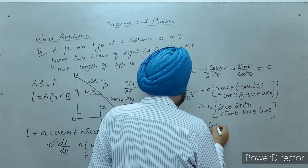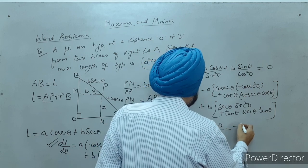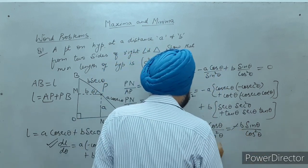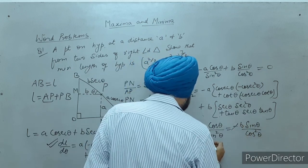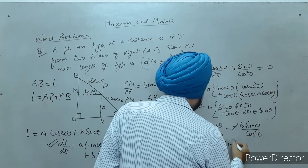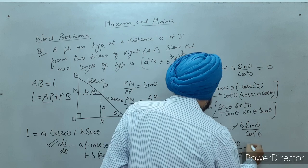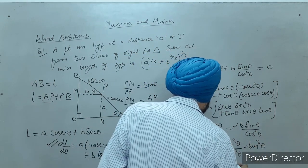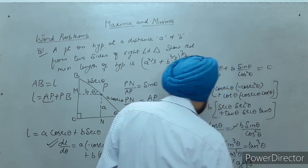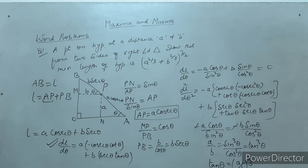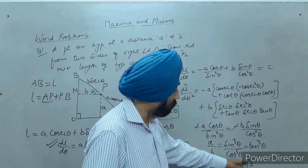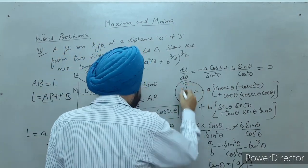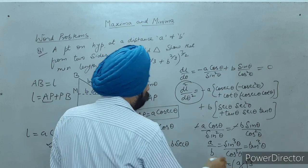Setting DL/dθ equal to zero: minus A cos theta divided by sin squared theta equals negative B sin theta upon cos squared theta. The negatives cancel, giving sin cubed theta upon cos cubed theta equals A upon B. That is tan cubed theta equals A upon B, so tan theta equals (A/B) raised to the power 1/3. I will get the value of tan theta as A^(1/3) upon B^(1/3). Now I need to verify this gives a minimum by checking the second derivative is positive at this value of theta.